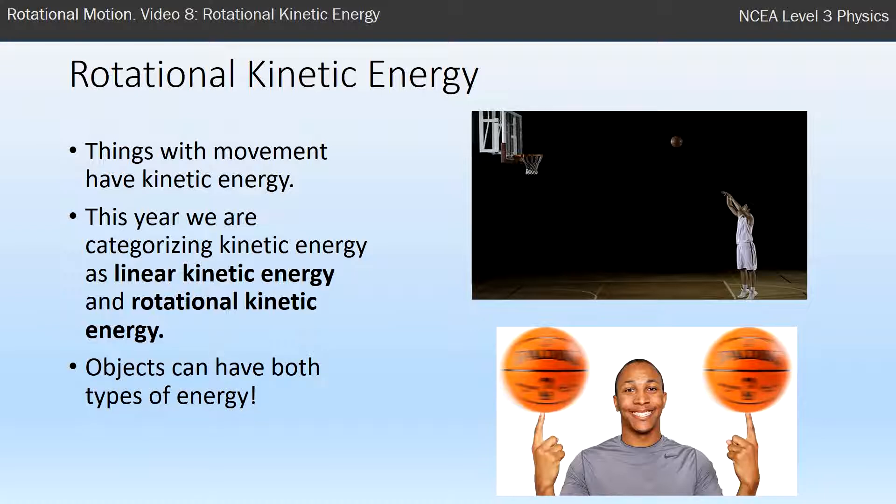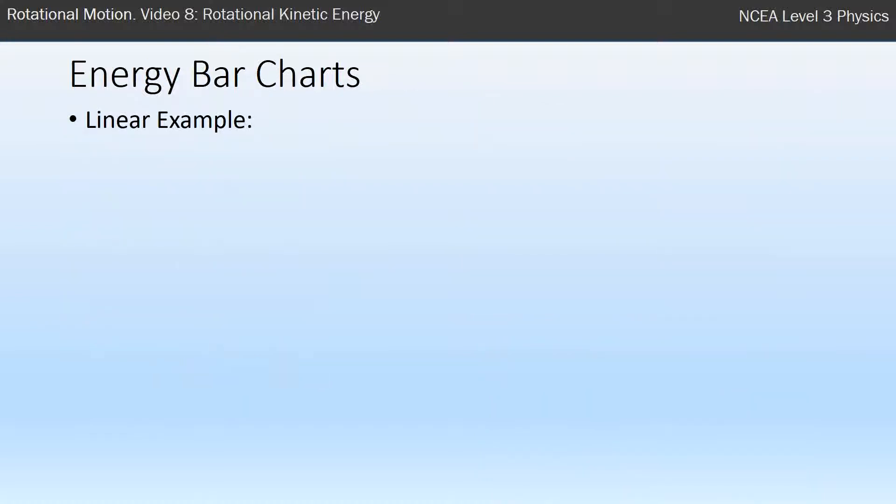Now objects can have both. An object can be spinning and moving at the same time and have the two types of energy. So I'm going to use an energy bar chart to explain how this works in principle. If you don't know what an energy bar chart is, I'll put a link to a description on a level two video on energy bar charts in the description of this video.